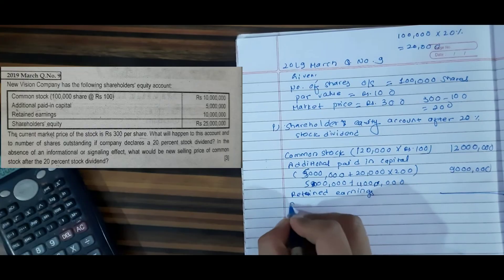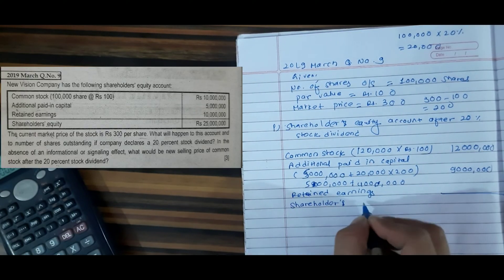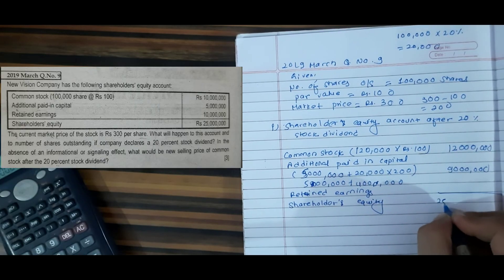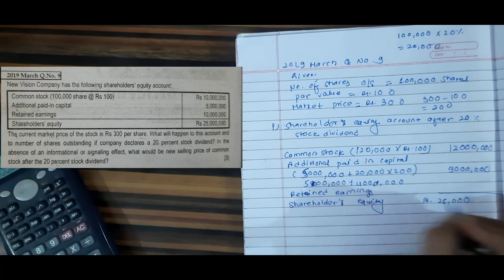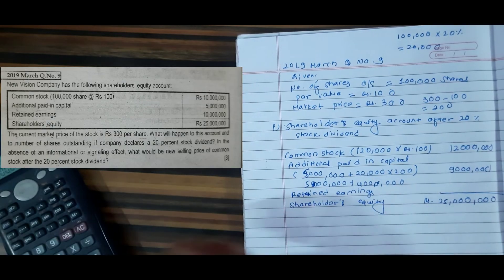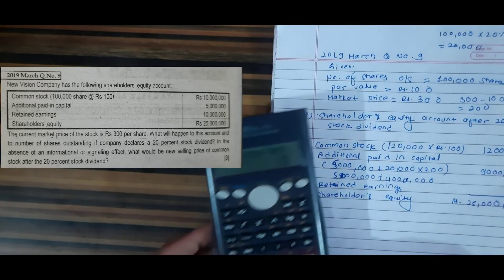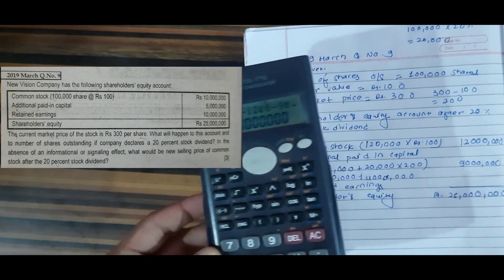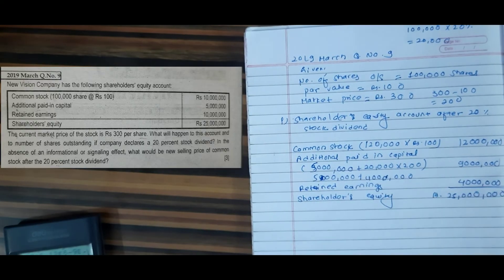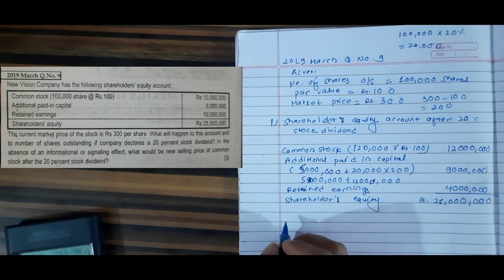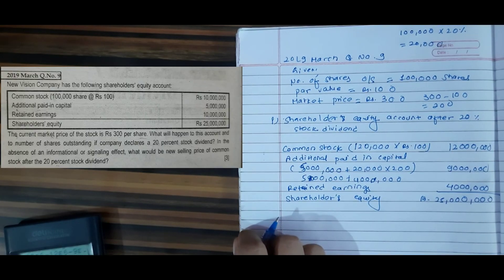Now I will calculate the retained earnings. Total shareholder equity remains 25 million. Common stock becomes 12 million. Additional paid-in capital becomes 9 million. So retained earnings equals 25 million minus 12 million minus 9 million equals 4 million. So retained earnings will be 4 million.